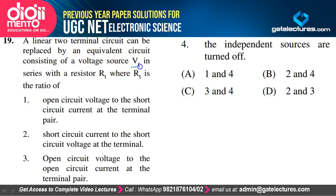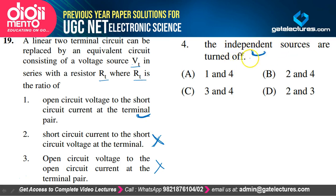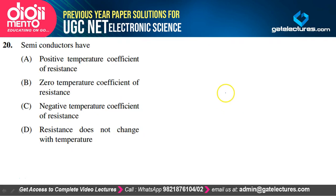A linear two-terminal circuit can be replaced by an equivalent circuit consisting of voltage Vt and series resistor Rt, where Rt is the ratio of open-circuit voltage to short-circuit current — true. And Rt is found by turning off independent sources — also true. Statements 1 and 4 are correct, so option A is the correct option.